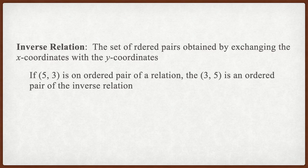When we're talking about a relation, we have a set of ordered pairs and we interchange the x's and the y's. So if (5, 3) is an ordered pair of the relation, then (3, 5) is an ordered pair of the inverse relation. All we're doing is switching the x and the y-coordinates for each other.